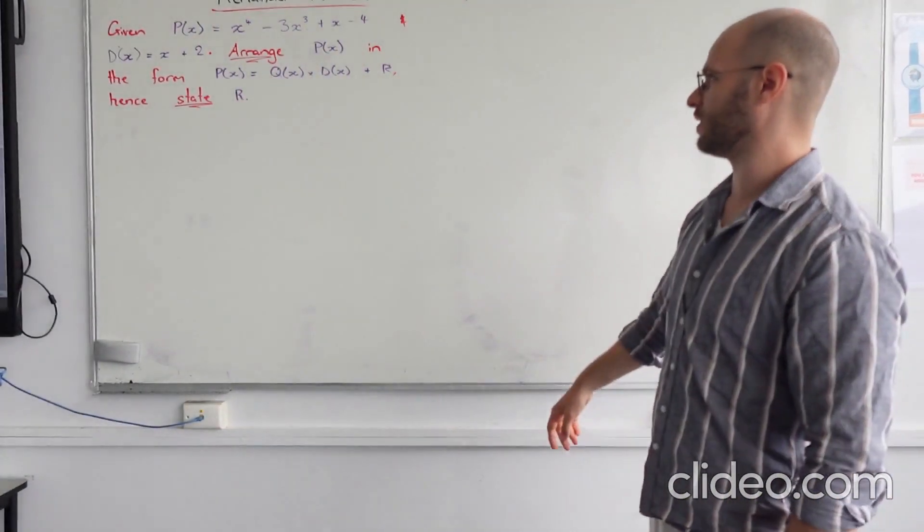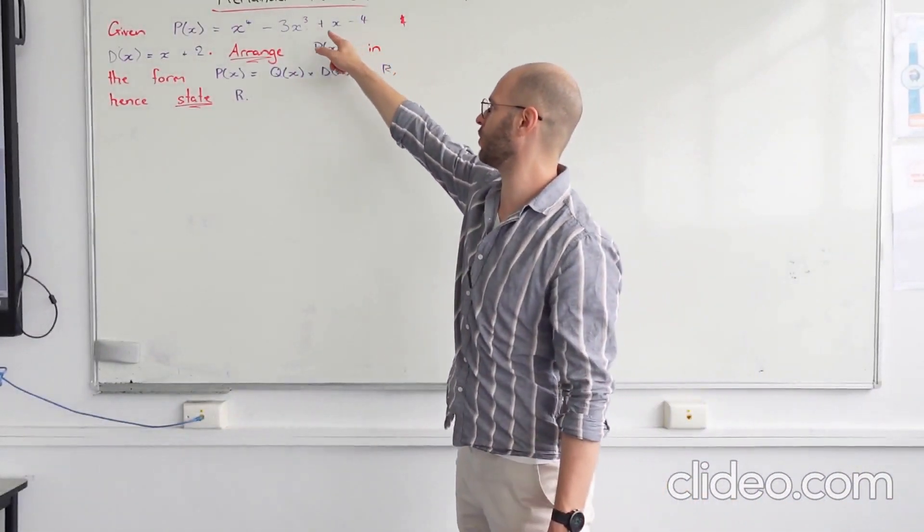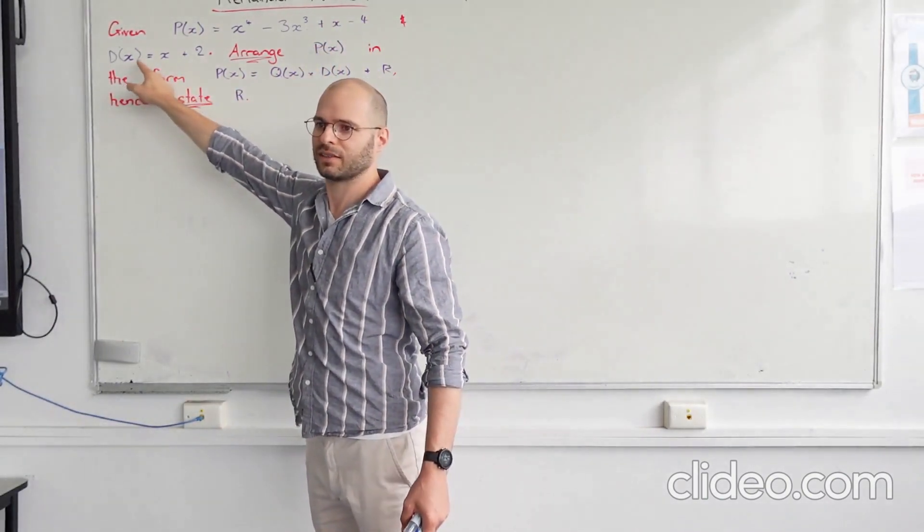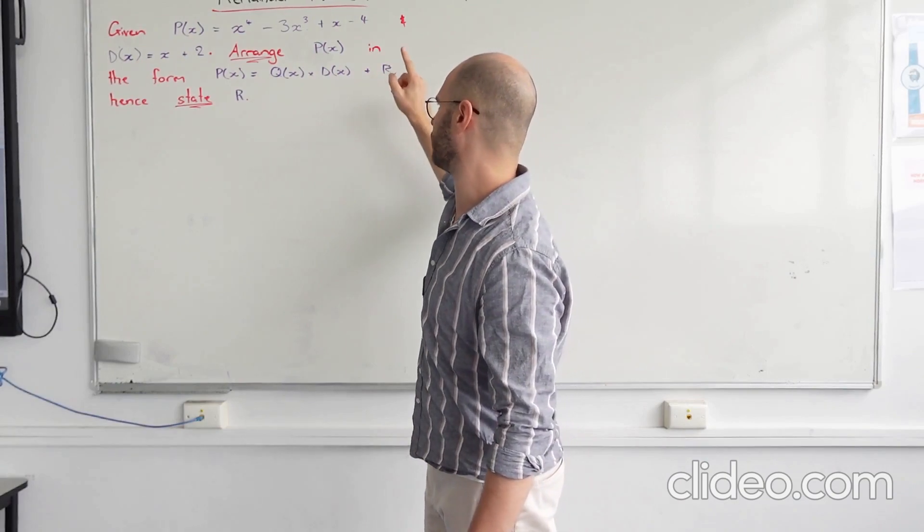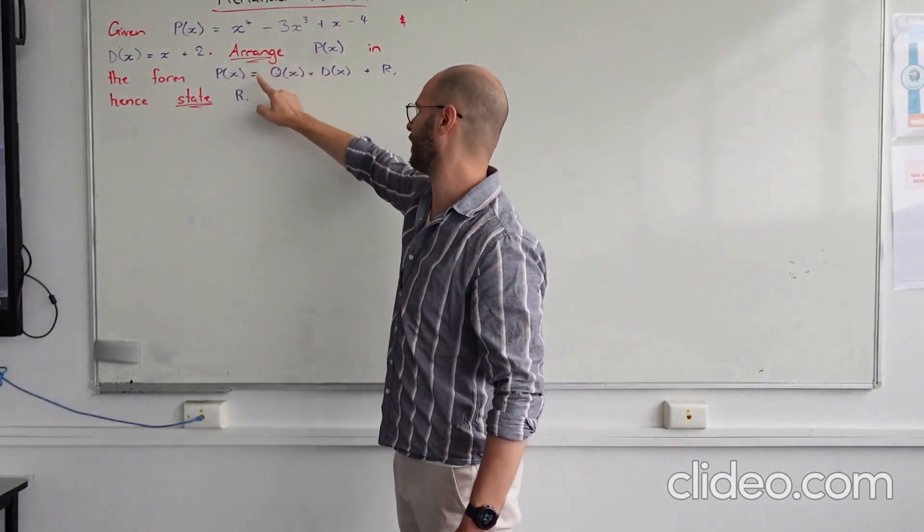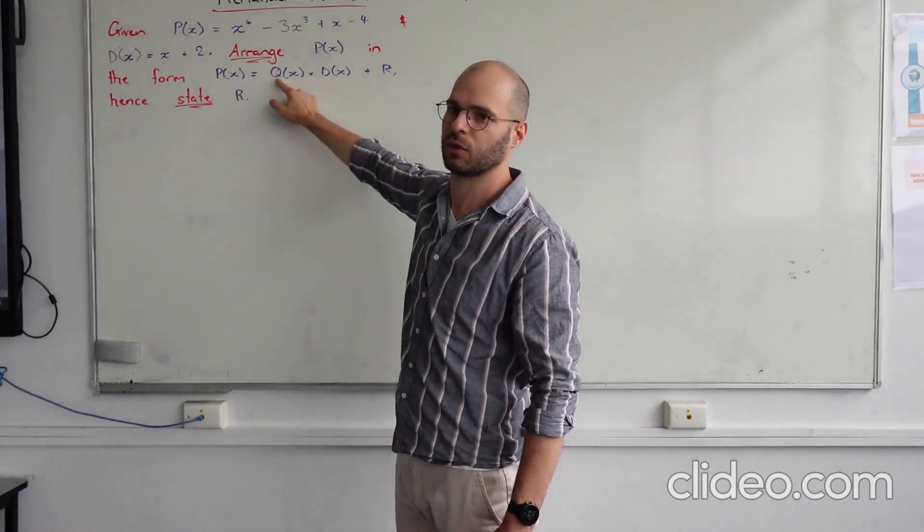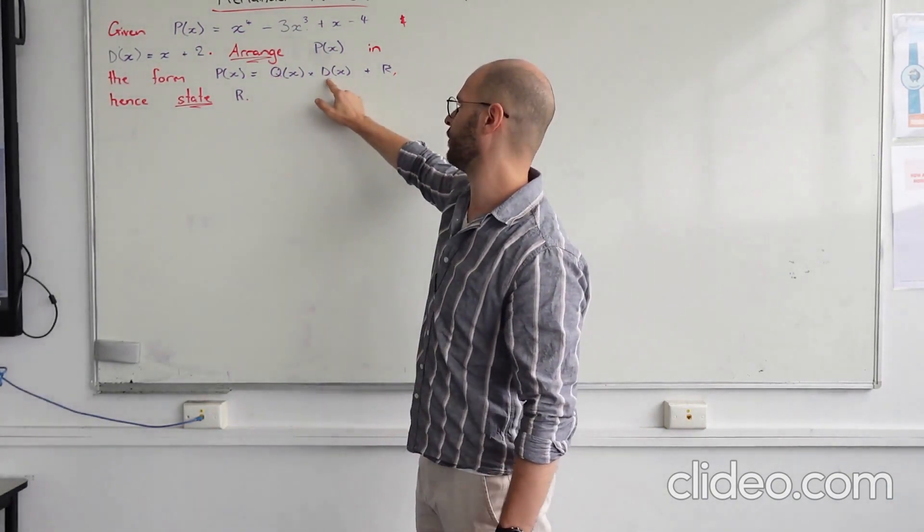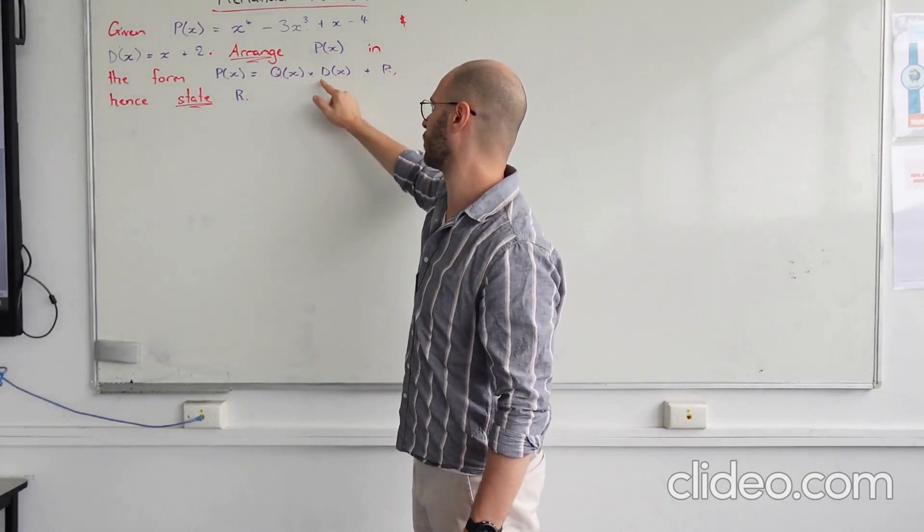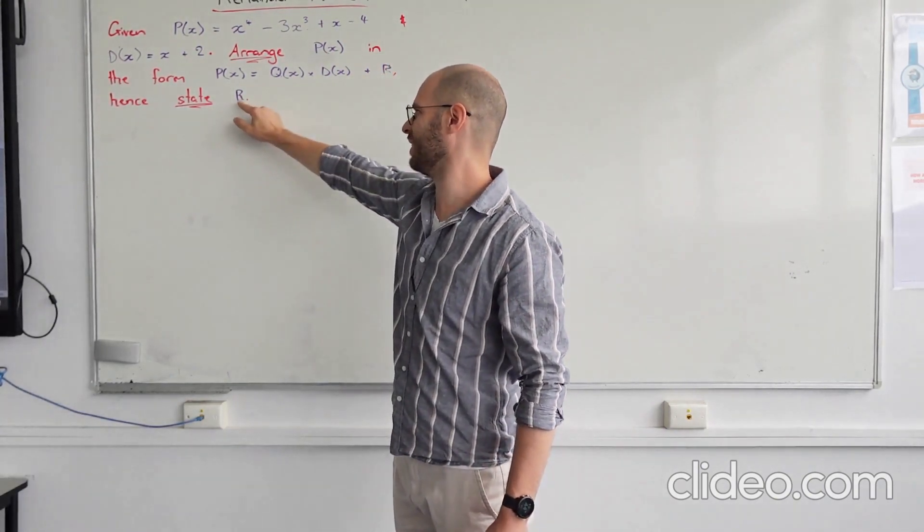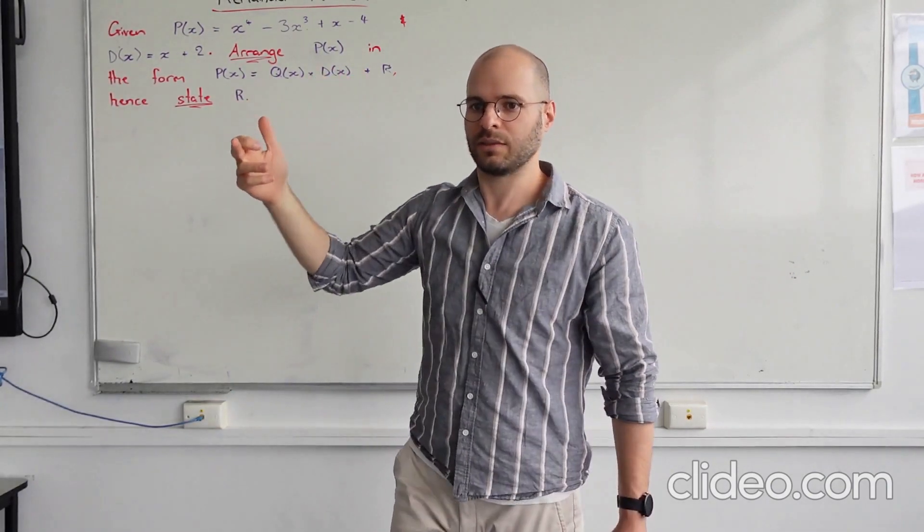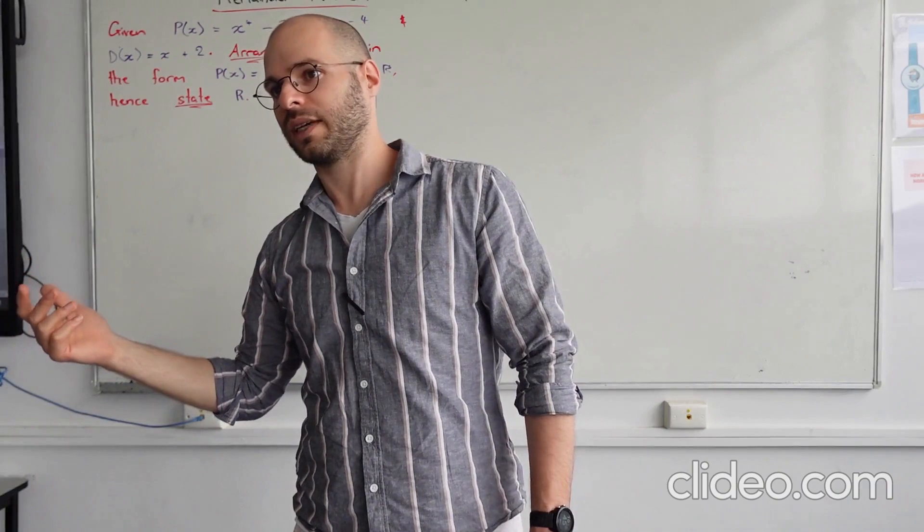We are in a situation where we have a polynomial and we have its divisor D of x, and we want to know what would be the remainder if we arranged the polynomial P of x in the form of Q of x, so Q for quotient, D for divisor and R for remainder. So we want to know what would it look like in this form and then secondly what would the value of R be. Now we've got two ways in which we can do this in our current toolkit.